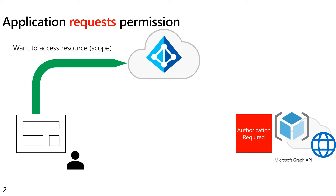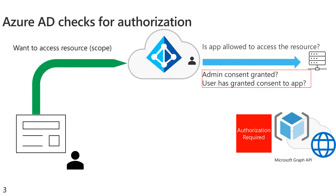You make a request to Azure AD to get an access token so that you can then access that resource. Azure AD will then turn around and see if it can answer the question: is this application — not the user, but the application — allowed to access the resource on behalf of the user? Specifically, we're looking for whether admin consent has been granted for everyone in this tenant by the admin, or whether this particular user has already granted consent to this application. If either one of those is yes, we can go ahead and issue the token and move on.